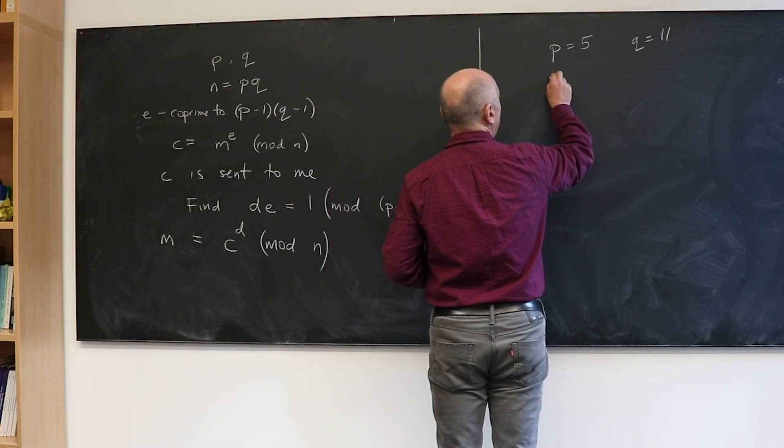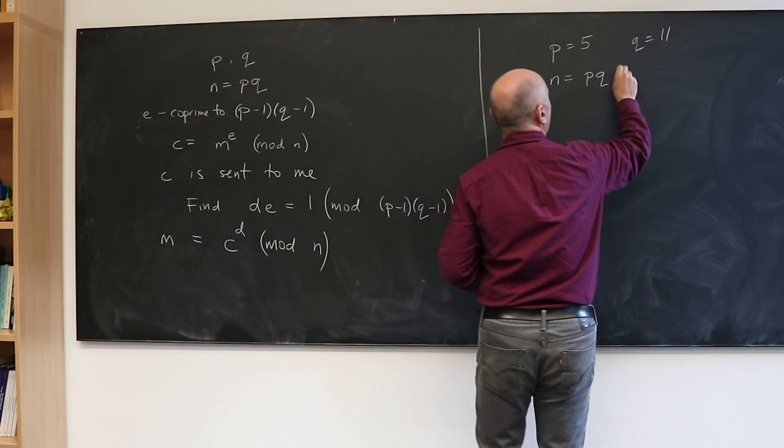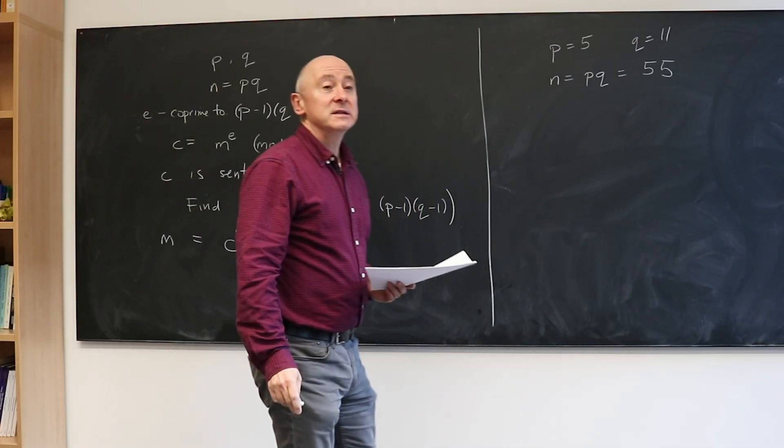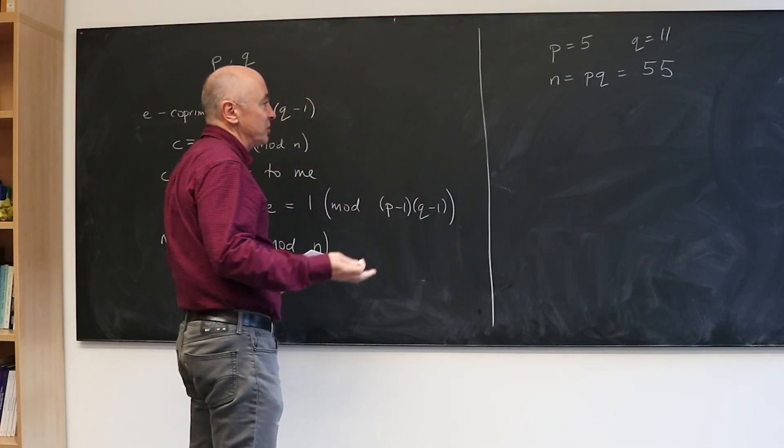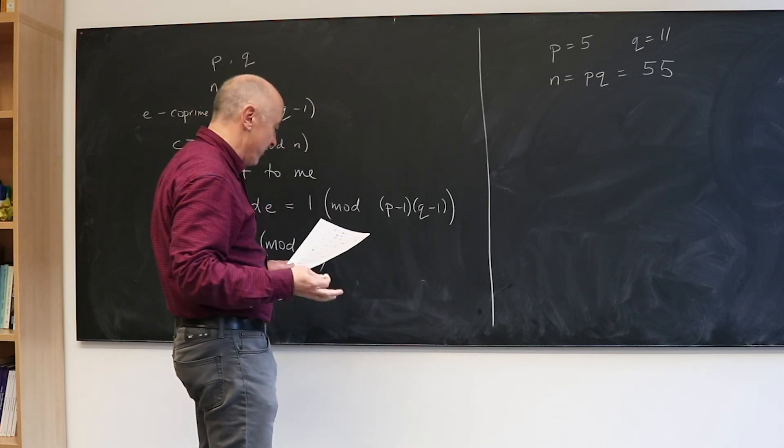So I know P and Q. They're things I've decided in advance. From them I form N which is P times Q, which is obviously 55. And that's a number I advertise. Anybody who wants to send me a message, I tell them use 55 for N.